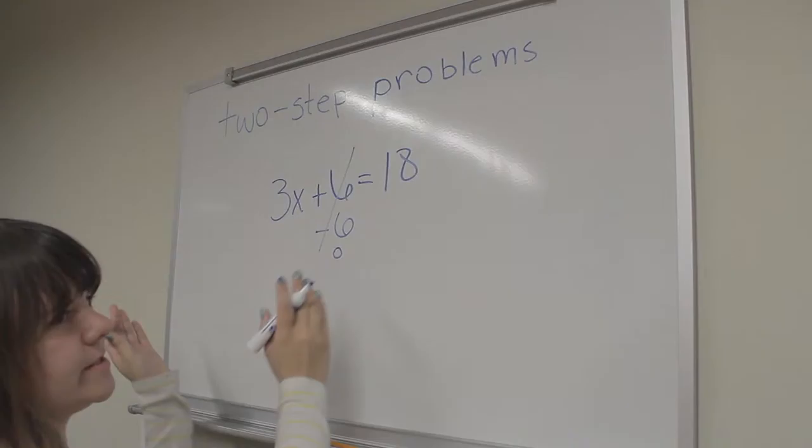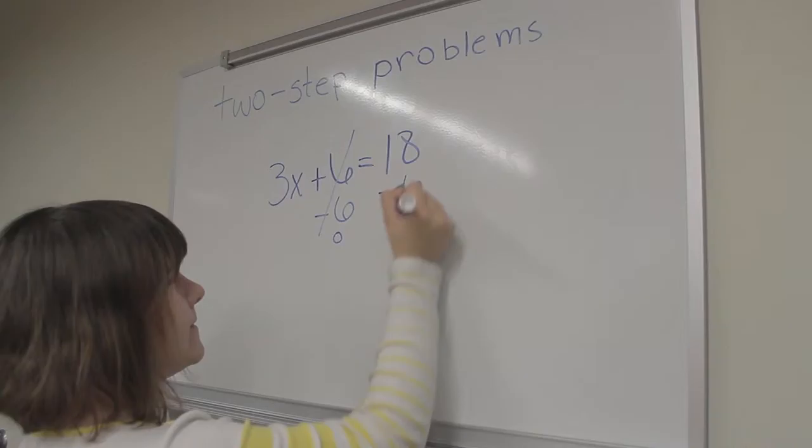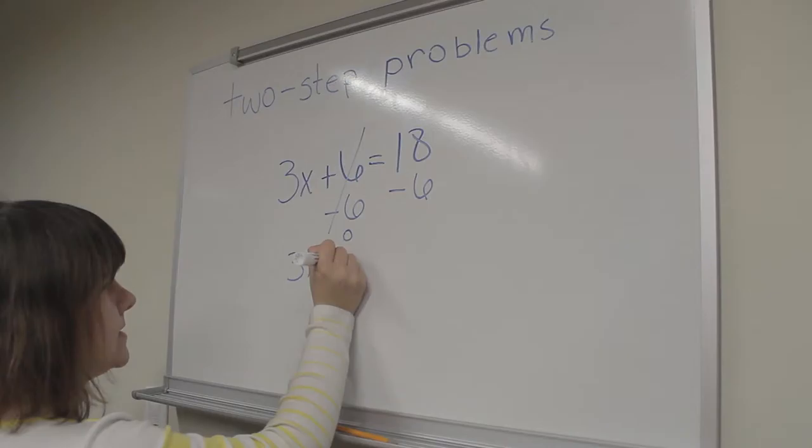And what you do to one side of the equation, you have to do to the other. So we need to subtract 6 from 18 and rewrite the problem: 3x is equal to 12.